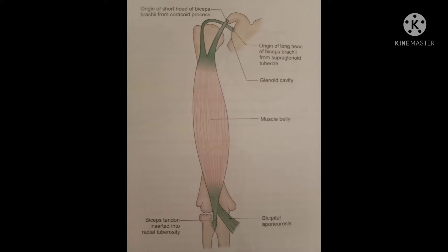Biceps brachii is a muscle of the anterior or flexor compartment of the arm. As the name indicates, 'bi' means two — it has two heads for its origin: short head and long head. Origin of the short head: it takes origin from...